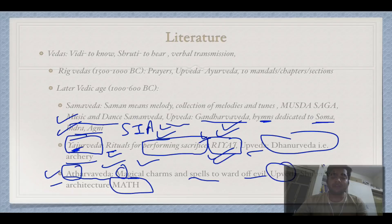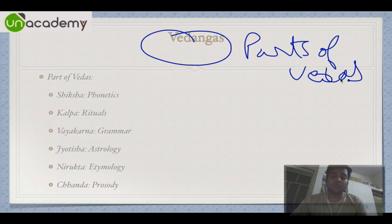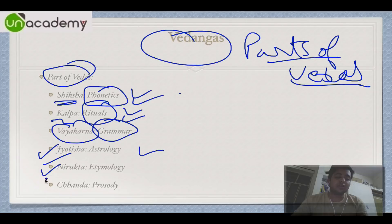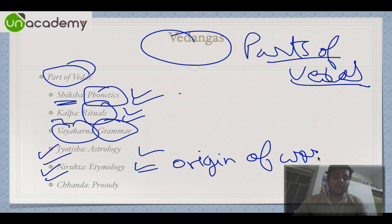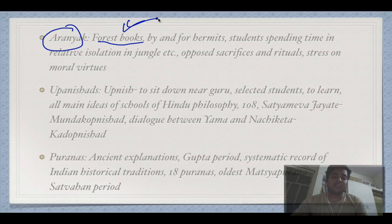Vedangas are sub-parts of the Vedas. There are six Vedangas: Siksha meaning phonetics, Kalpa meaning rituals, Vyakaran meaning grammar, Jyotish meaning astrology, Nirukta meaning etymology — the origin of words — and Chanda meaning prosody, which covers writing poetry and verse forms.